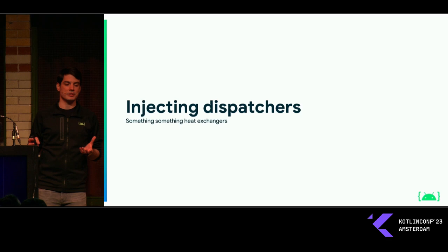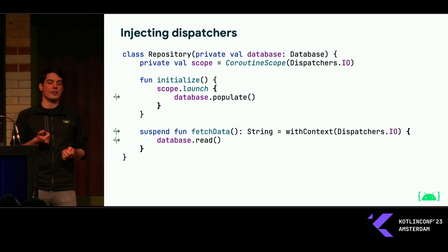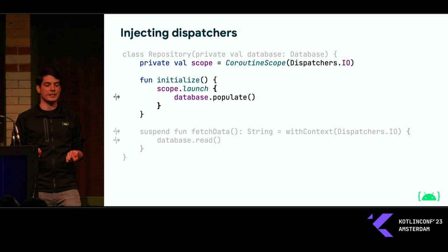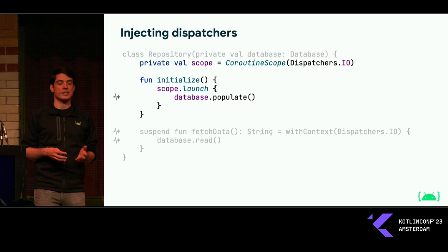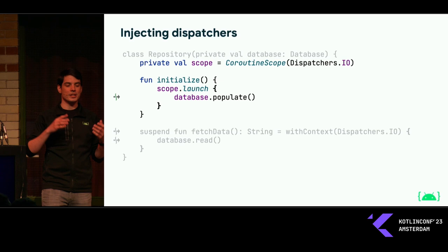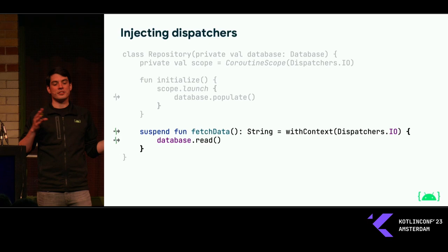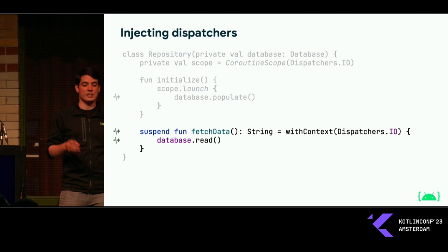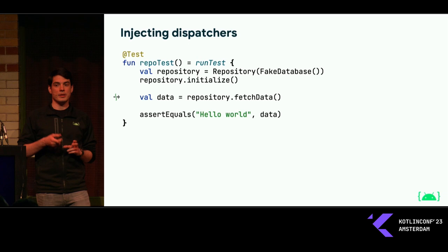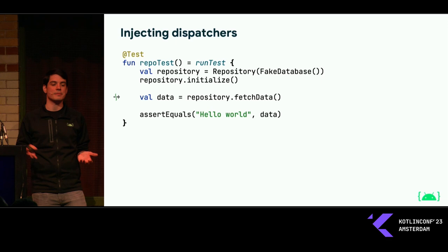Let's start looking at some best practices around coroutine testing, and the main point is injecting dispatchers, which is very important. For this example, we'll use a made-up repository class which depends on a database and uses the IO dispatcher for a couple of things. First, it creates its own internal coroutine scope using the IO dispatcher. It has an initialize method that launches a new coroutine in that scope on the IO dispatcher and populates the database with some initial data. Then it also has a suspending function that switches the caller to the IO dispatcher and fetches data from the database.